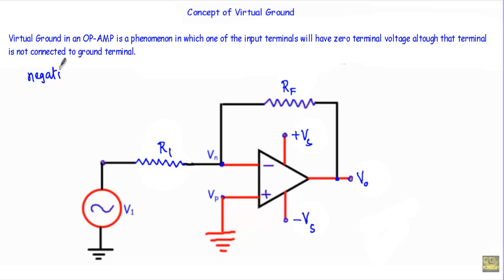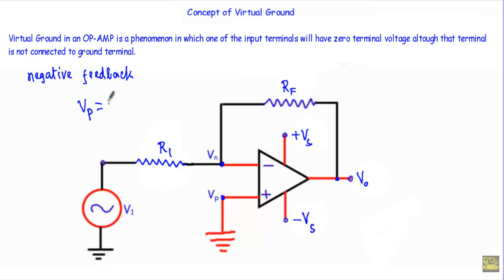When the operational amplifier is in negative feedback, the non-inverting terminal voltage VP will be equal to Vn. That means the non-inverting terminal voltage and the inverting terminal voltage will be equal.